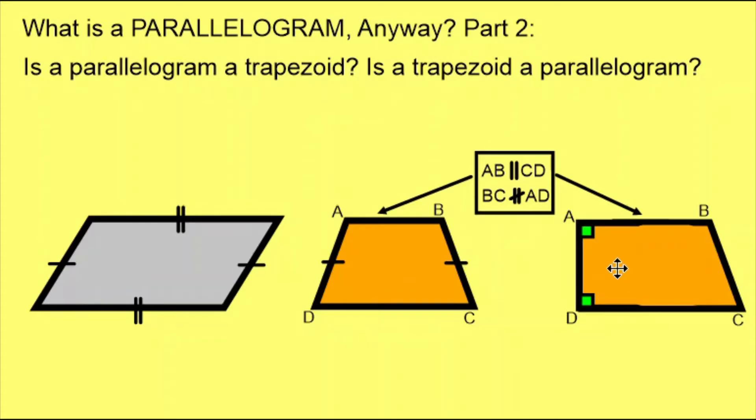But in order to know for sure that this is a trapezoid, we need more information. So in this little box, we have a bit of extra information. It tells us that sides AB are parallel to sides CD in both of the trapezoids. And that side BC and side AD are not parallel in both of the trapezoids.